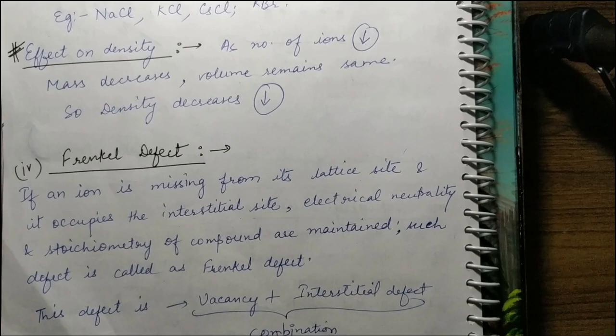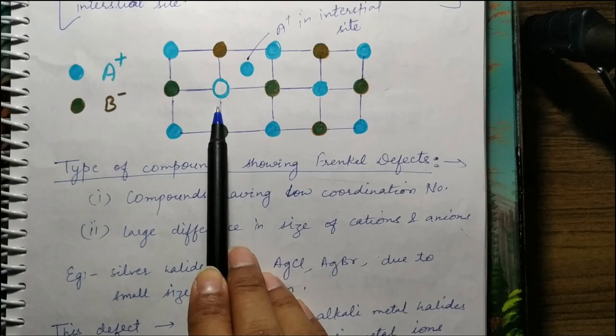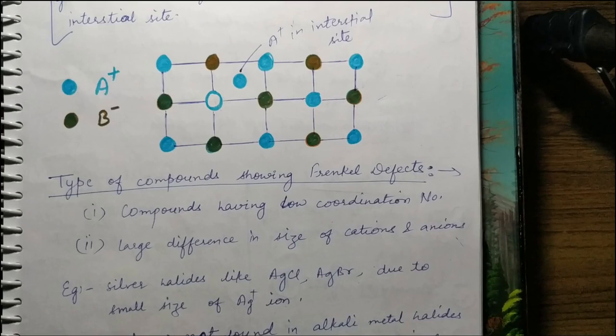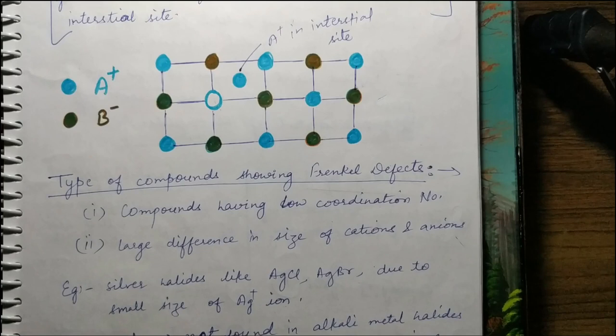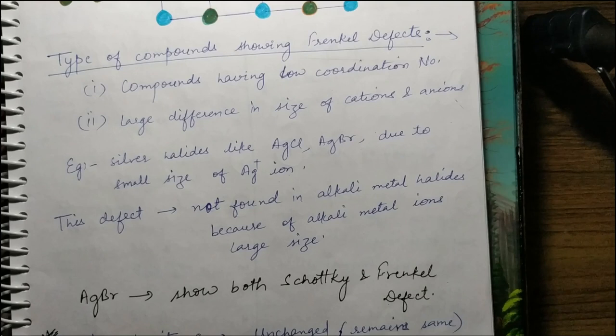Then Frenkel defect: an ion goes missing from a lattice site and is present in an interstitial site within the same lattice. Since cations are always smaller than anions, it is the cation that moves to an interstitial site. Stoichiometry is maintained because the ion is still somewhere in the crystal, and electrical neutrality is maintained too. It is a combination of vacancy and interstitial defect. Density here is unchanged because there is no loss of mass.